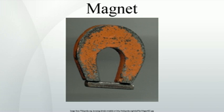Rare earth elements have a partially occupied F electron shell, which can accommodate up to 14 electrons. The spin of these electrons can be aligned, resulting in very strong magnetic fields, and therefore these elements are used in compact high-strength magnets where their higher price is not a concern. The most common types of rare earth magnets are samarium-cobalt and neodymium-iron-boron magnets.